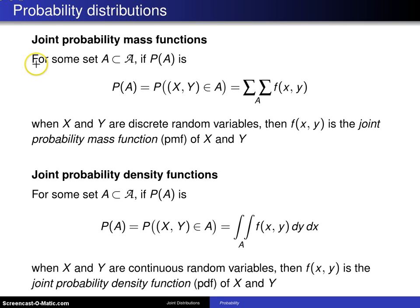In the discrete case, for some set A, a subset of script A, if P of A is the probability of A equals the probability XY is an element of the set A, and that equals the double summation over the set A of f of XY when X and Y are discrete random variables, then f of XY is known as the joint probability mass function, abbreviated PMF, of X and Y.